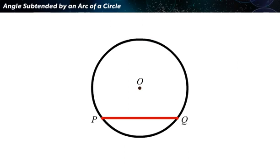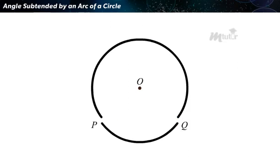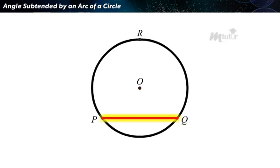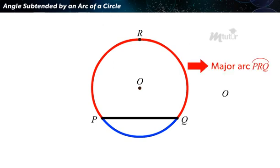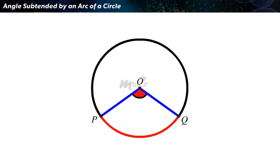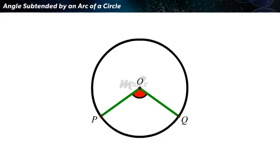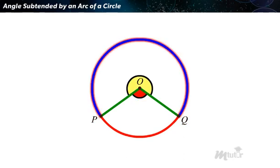Any chord divides the circle into two parts. When the chord is not a diameter, the two arcs formed are one major arc and the other minor arc. Also, the angle subtended by an arc at the center is defined to be the angle subtended by the corresponding chord at the center. The minor arc PQ subtends the angle POQ, while the major arc subtends the reflex angle POQ.